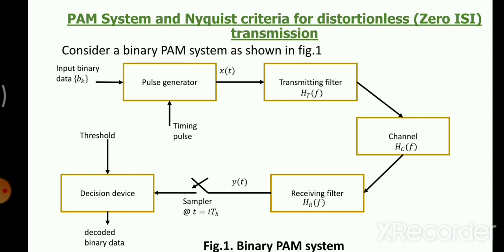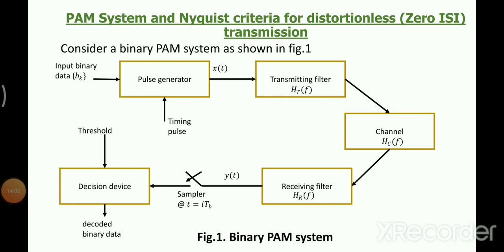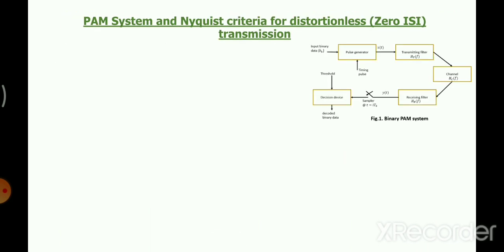The idea is to find the condition for zero ISI. We'll go through it step by step — starting with the transmitter part and moving to the receiver. For the transmitter side, the signal is given by x(t), which is the transmitted waveform.